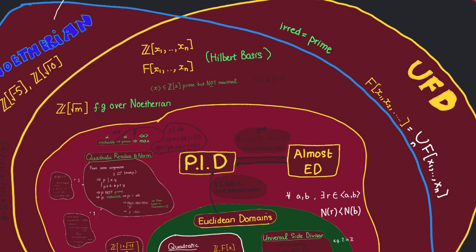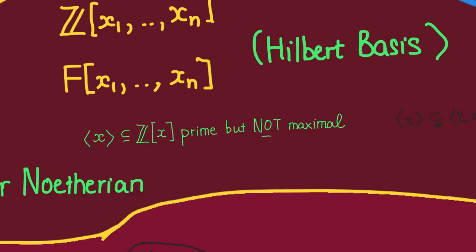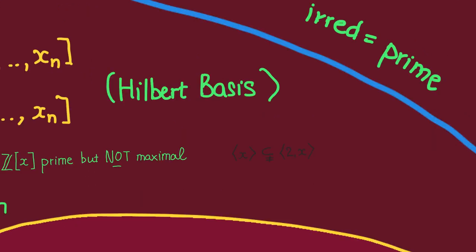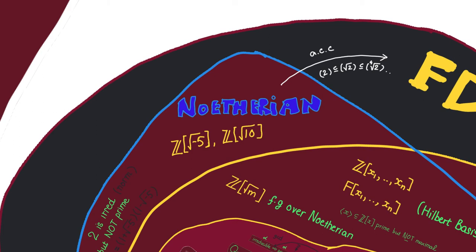One last major point: in a PID, every prime ideal is maximal. This is easy to show because in a PID, containment corresponds to divisibility. But this is not true for a general domain. For example, in ℤ[X], the ideal (X) is prime because the quotient ℤ[X]/(X) ≅ ℤ is an integral domain, but (X) is not maximal because it's properly contained in the proper ideal (X, p). A ring in which every prime ideal is maximal is said to have Krull dimension 1.